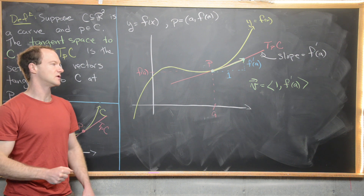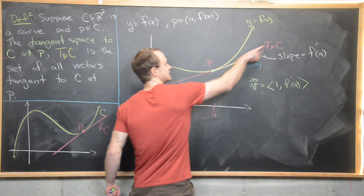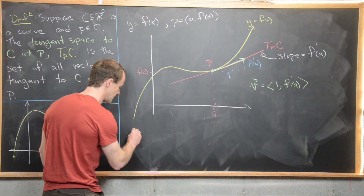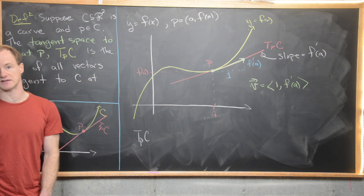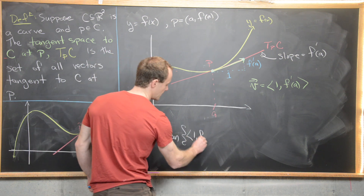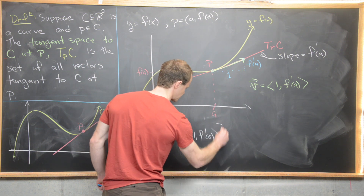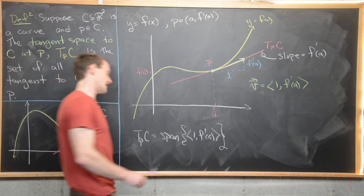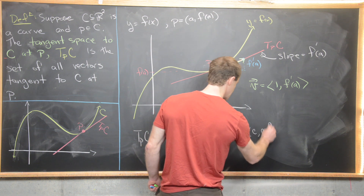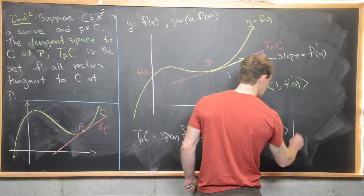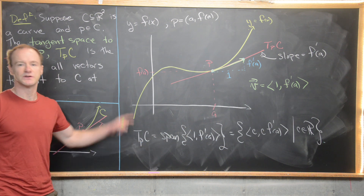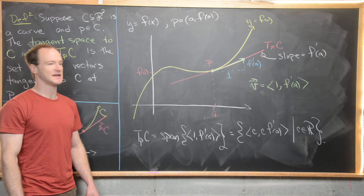In a linear algebra sense, this tangent space is really the span of this vector — in other words, all real number multiples of it. Positive multiples go up in this direction; negative multiples go down. So we can carefully write T_P of C in this case as the span of the vector (1, f prime of A). Or equivalently, using the definition of span, this is {(c, c·f prime of A)} as c ranges over all real numbers. This is a nice Calculus 1 take on the tangent space.